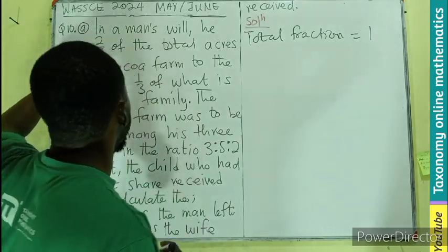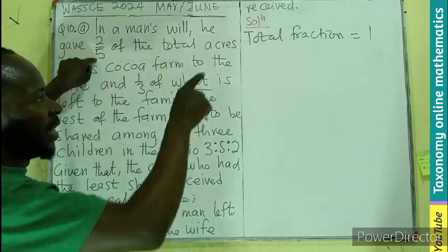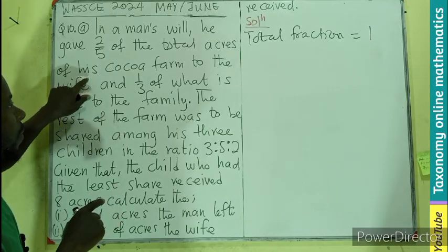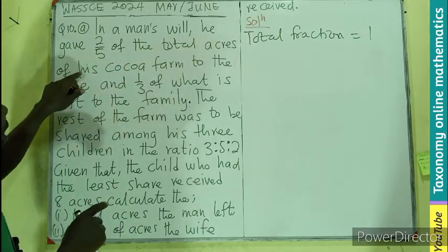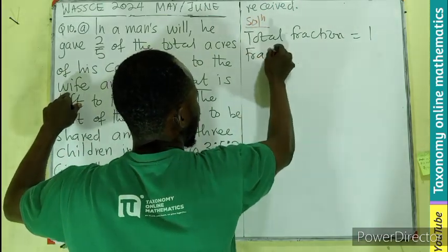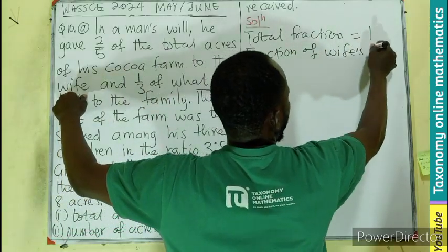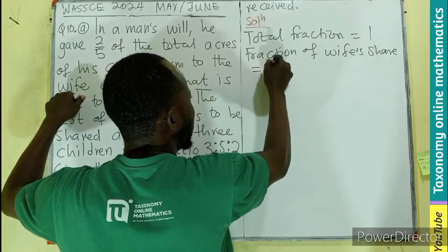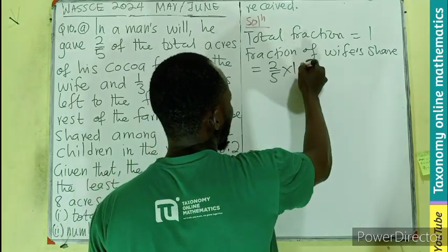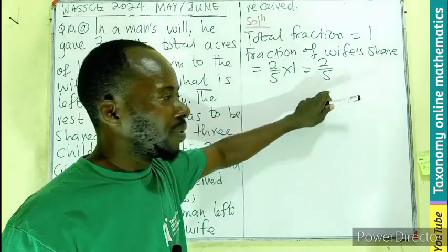If that is the case, we pick what? Two-fifths of the total. So two-fifths times the total will give you the same two-fifths. So that is what is given to the wife. Two-fifths of the total acres of his cocoa farm given to the wife. So the wife's share or fraction of wife's share is going to be two-fifths times the 1, which will still give us two-fifths. So this is what we are giving to the wife.